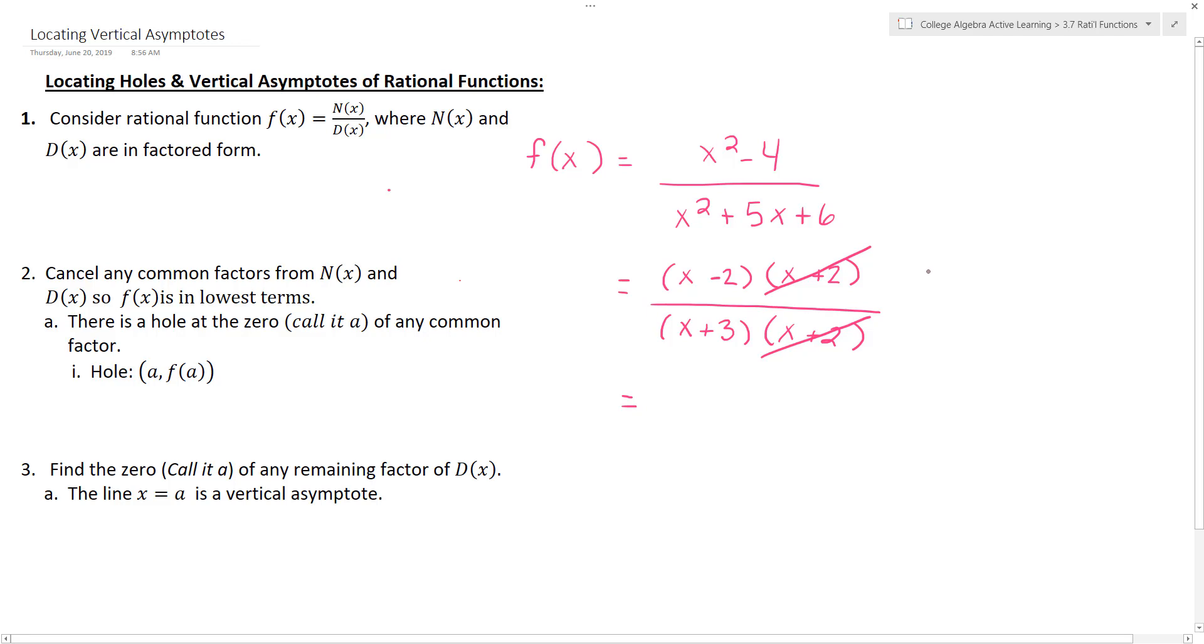In fact, you would take that common factor and set it equal to 0 to find the hole. We'll subtract 2 from both sides and we get x equals negative 2. So we know that this function has a hole at the point negative 2 comma f of negative 2. We'll have to figure out that f of negative 2 piece.